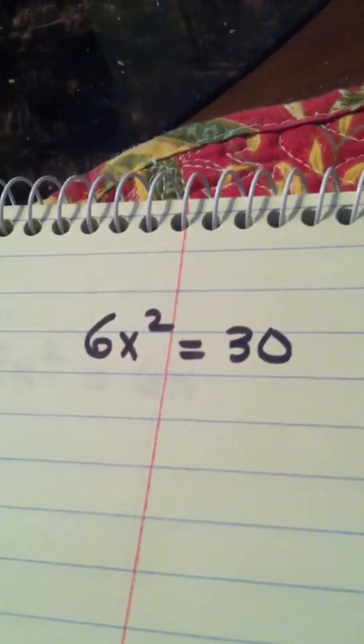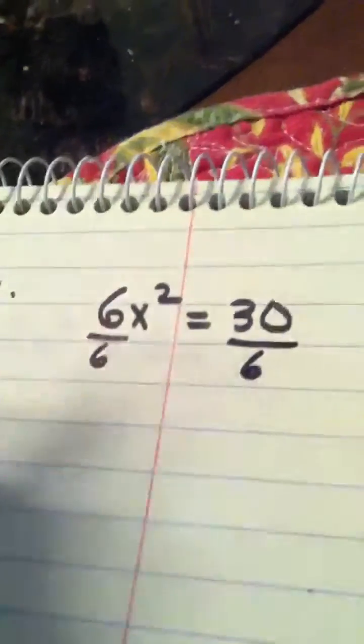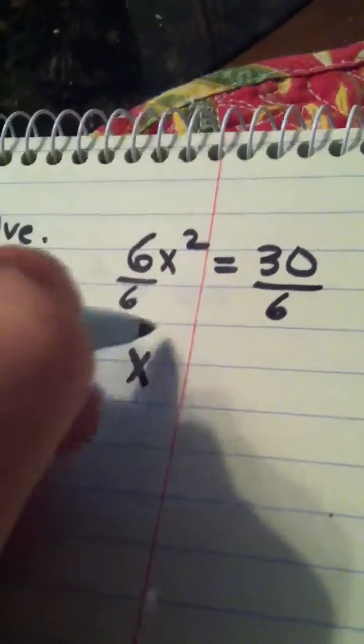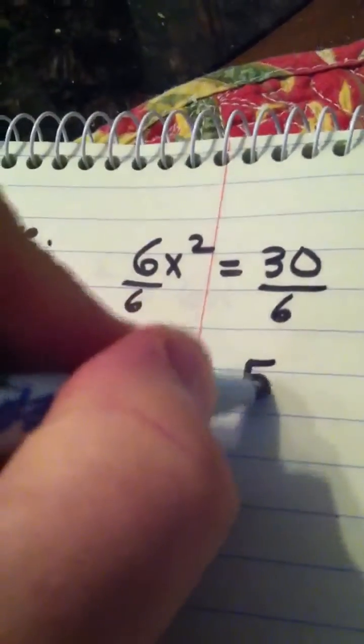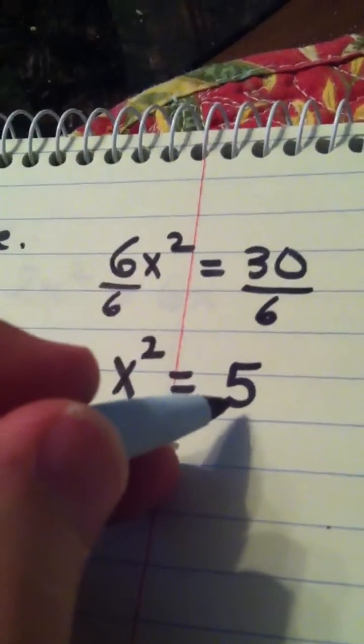The first step in using the square root property is to get the squared term alone. So my first step here is to divide by 6. So I have x squared is equal to 5. x squared equals the constant 5.